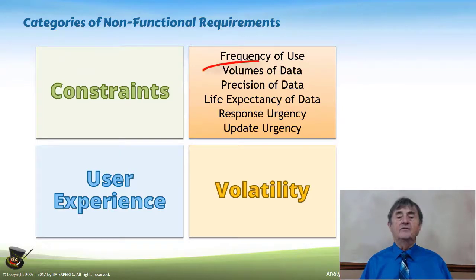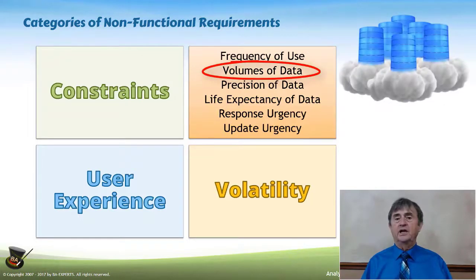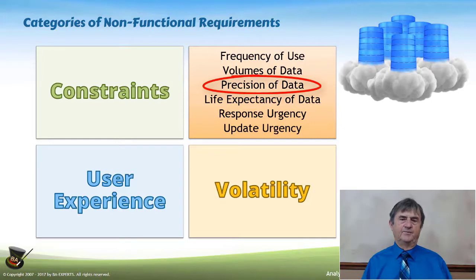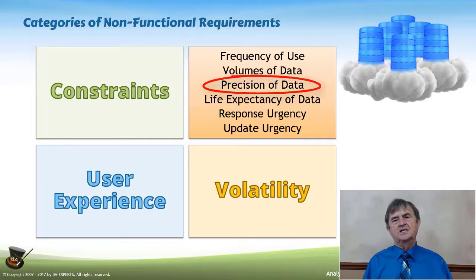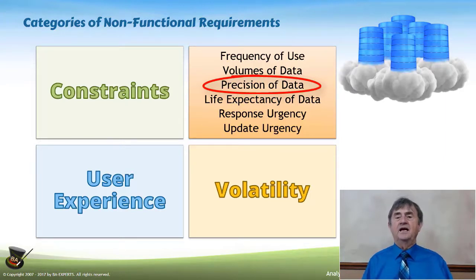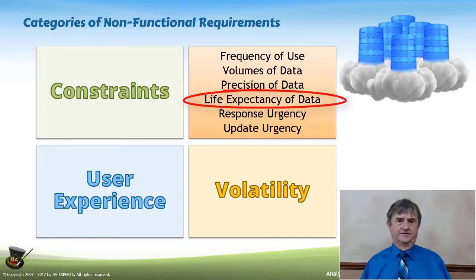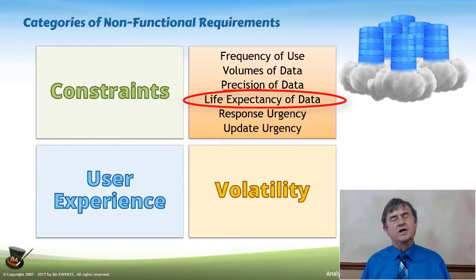Other important performance considerations include volumes of data — how much information is created every time a function runs, how much data it uses, and how precise the data has to be. If we're talking about precision of numbers, it's measured in the number of decimal places behind the decimal point that the data must have to be considered accurate. We also need to take into account how long the data lives — data has a life cycle. It's created, it is used, and at some point it becomes irrelevant. That's the life expectancy of data.